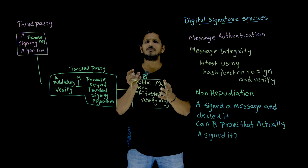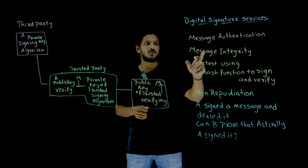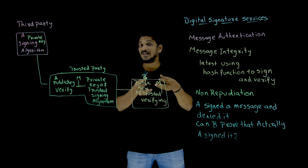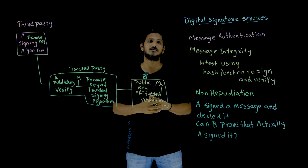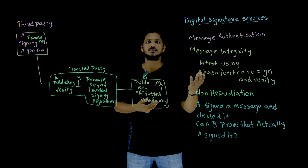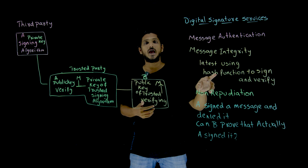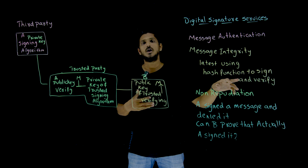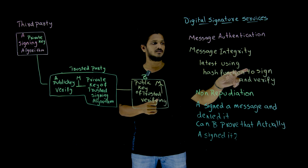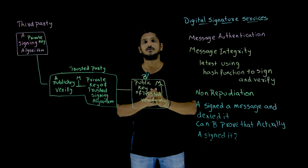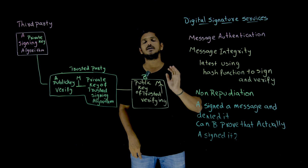Similarly, we can provide Message Integrity. Why can we provide Message Integrity? For each message, we are going to generate a unique signature. If you change the message, the signature also changes. This is the concept of Message Integrity. That is why in the latest Digital Signature Algorithms, we are using Hash Function type of algorithms so that we can use it for Message Integrity also. For signing and verifying, we are going with Hash Function logic, and by using that we can provide Message Integrity.